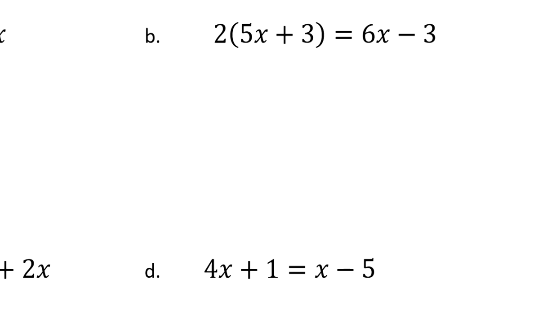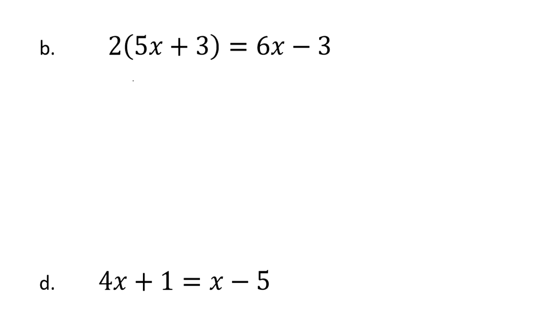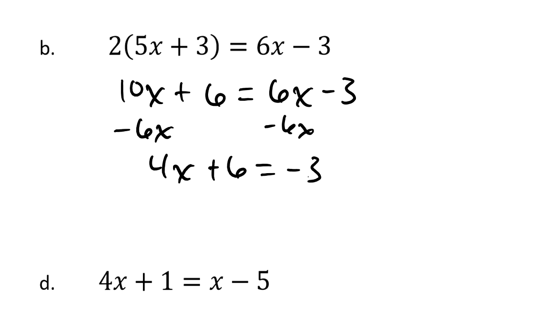Let's look at b. Again, this time I'll be more careful in my application of the distributive property. Here we have a 10x plus 6. Over on the other side, there is 6 times x minus 3. I'm going to take away 6x's from each side. And when I do that, on the left-hand side, I'm left with 4 of them. Plus 6 equals negative 3. I'm going to go ahead and subtract the 6 from each side. So that gives me 4x equals negative 3 minus 6 is negative 9.